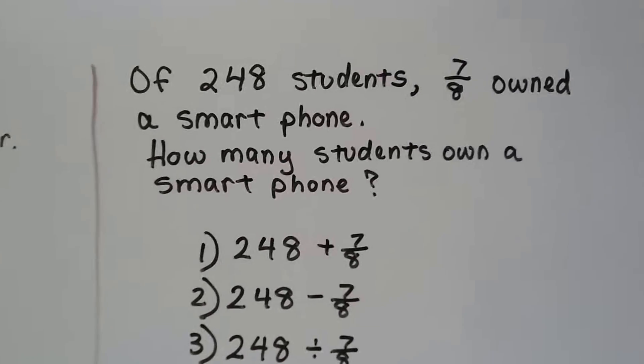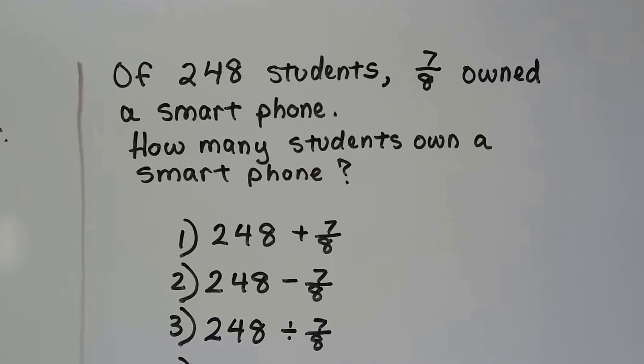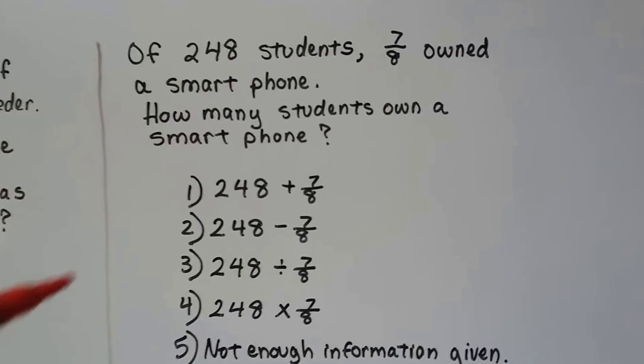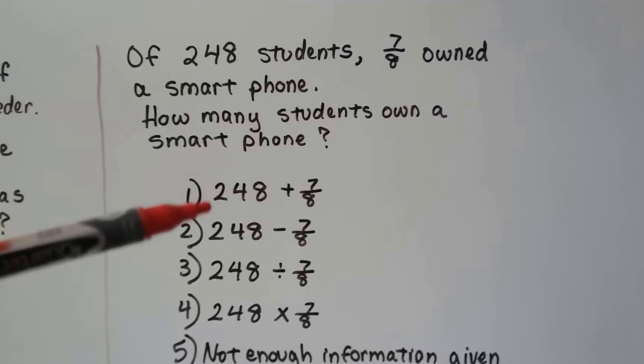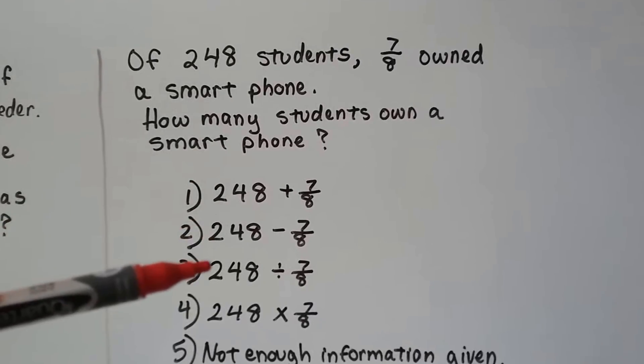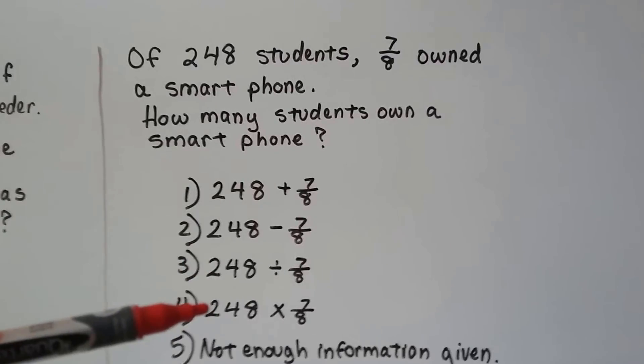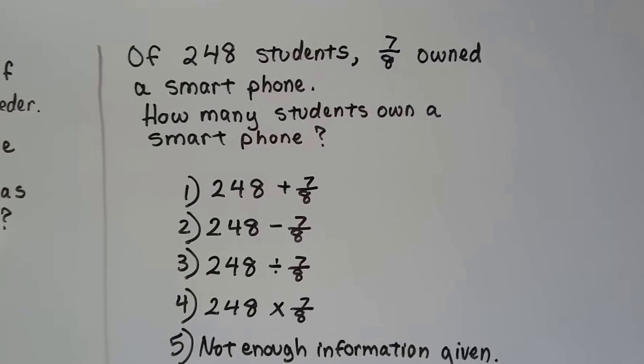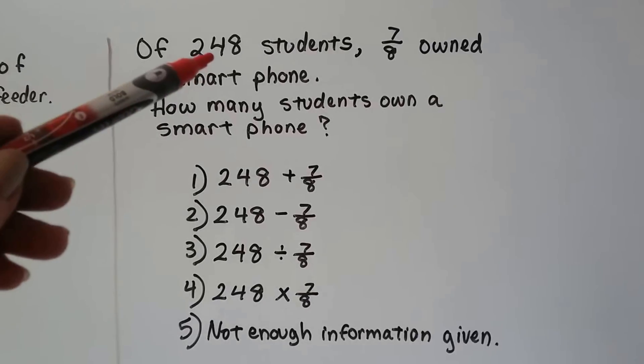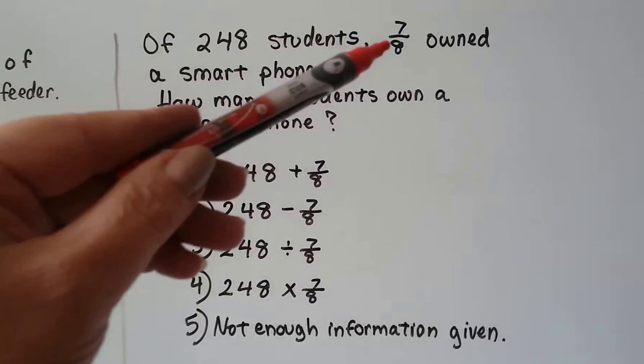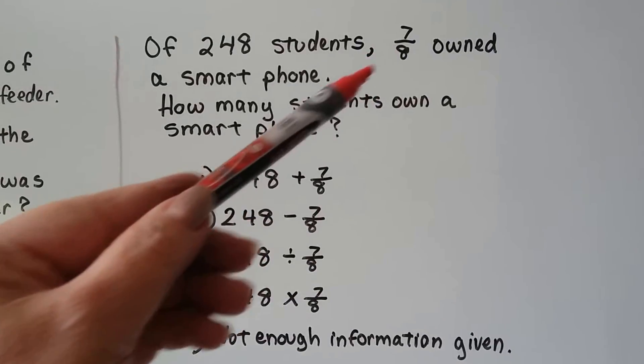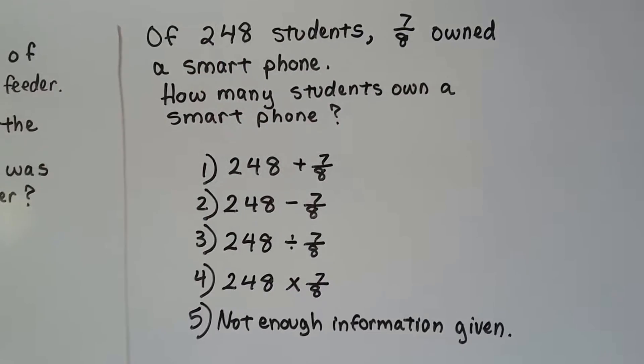Of 248 students, seven eighths owned a smartphone. How many students owned a smartphone? All right. We're going to add these two numbers together, we're going to subtract and do 248 minus seven eighths, are we going to divide, are we going to multiply, or is there not enough information? That's how many in all, and that's how many own a smartphone.